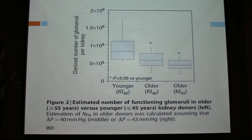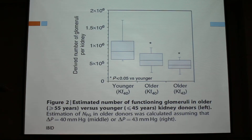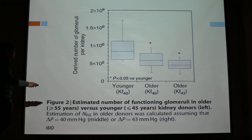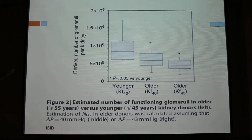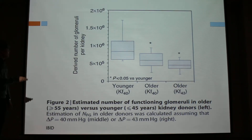Second, we're going to look at the NFG. Figure 2 shows the estimated number of functioning glomeruli in older versus younger kidney donors. The y-axis is the total number of functioning glomeruli per kidney, and the x-axis is the age group — younger and older. You can see that the number of functioning glomeruli is much higher in the younger group than the older group.